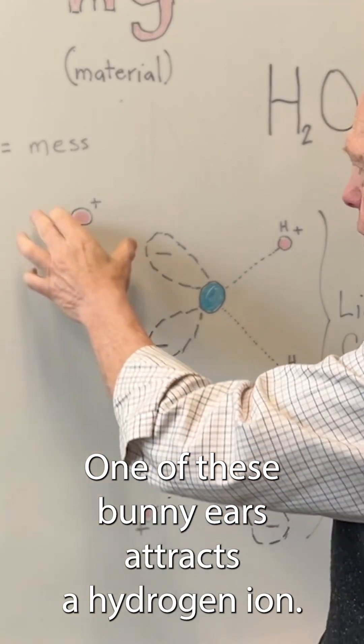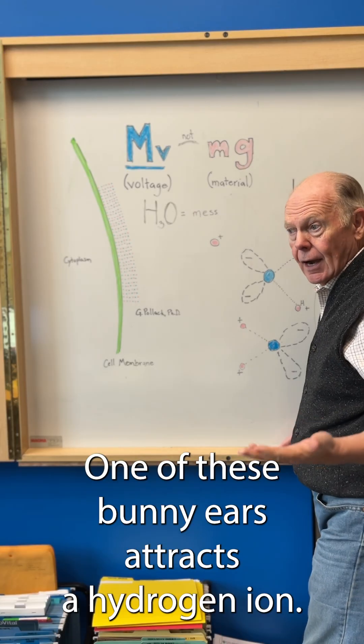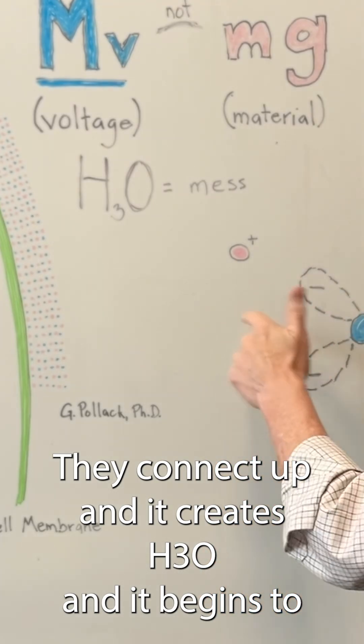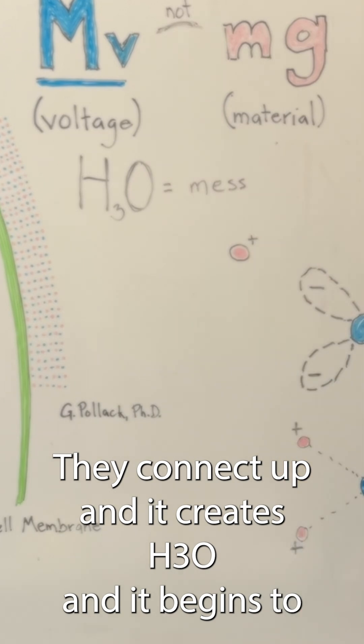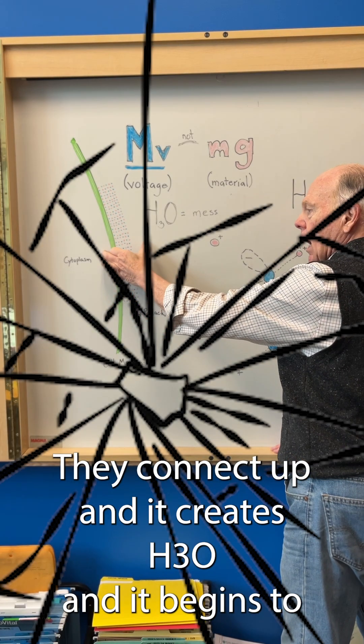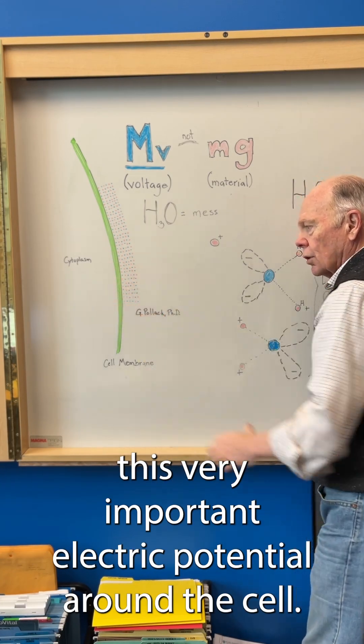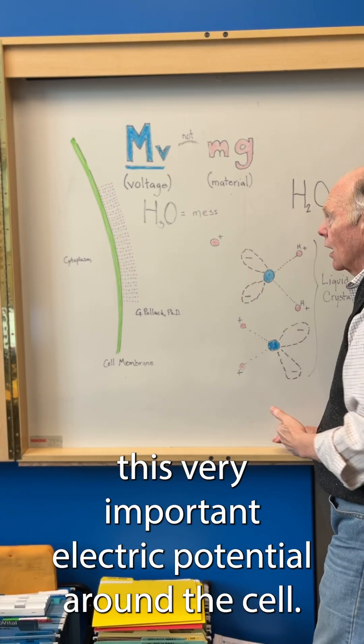One of these bunny ears attracts a hydrogen ion. They connect up, and it creates H3O, and it begins to break up this very important electric potential around the cell.